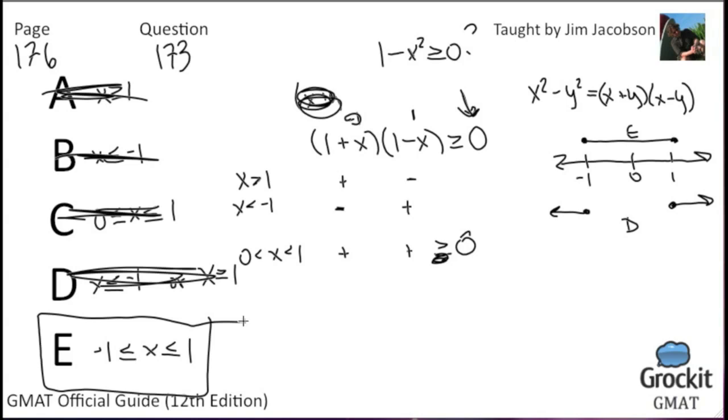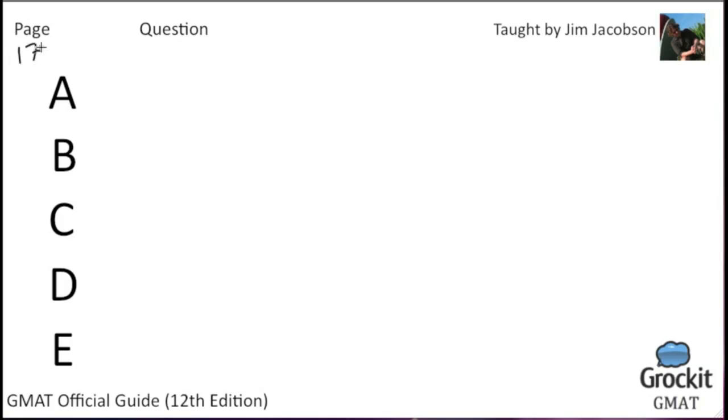And with that, we move on to page 177, question number 174. The probability is 1 half that a certain coin will turn up heads on any given toss. If the coin is to be tossed three times, what is the probability that on at least one of the tosses, the coin will turn up tails?